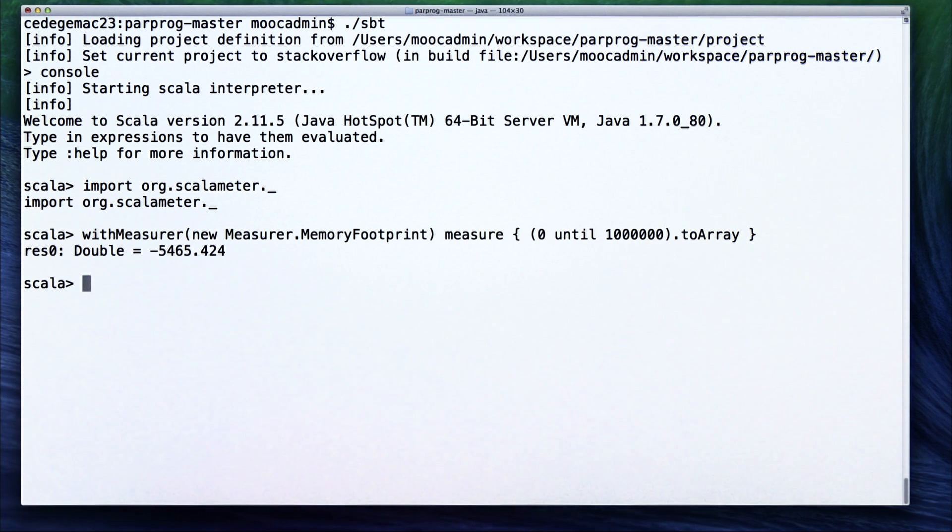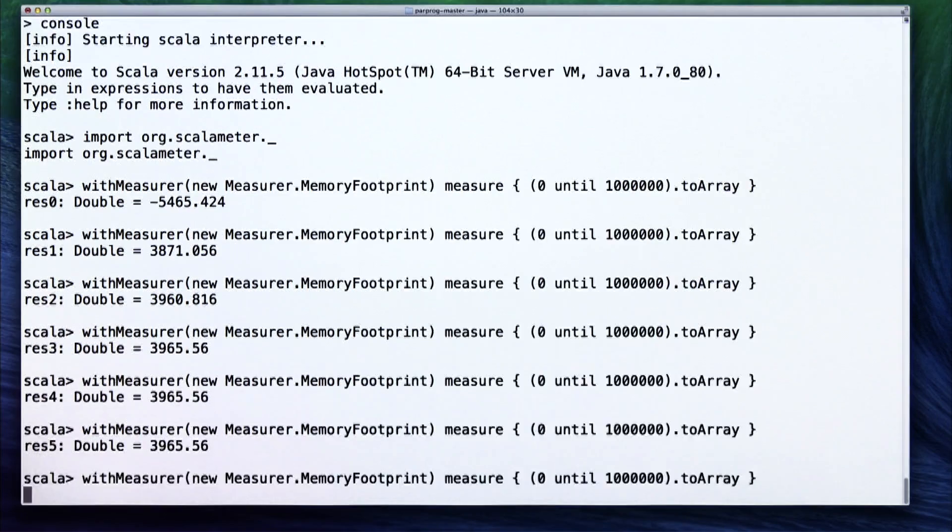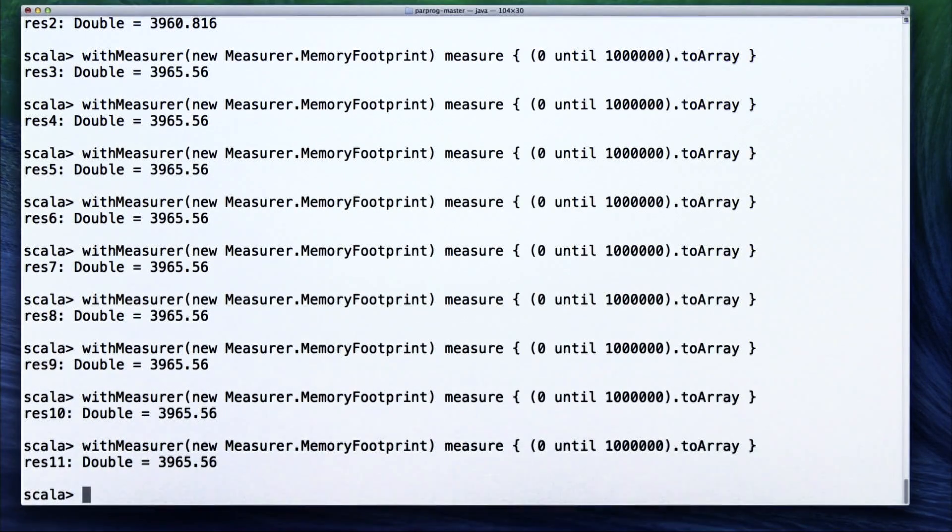Strangely enough, we got a negative value. This is because we didn't use a warmer to ensure steady state. We will run the benchmark several more times to ensure that some steady state has been reached. We can see that measuring the memory footprint is much less noisy than measuring the running time. The total memory footprint is around 4000 kilobytes or 4 megabytes.